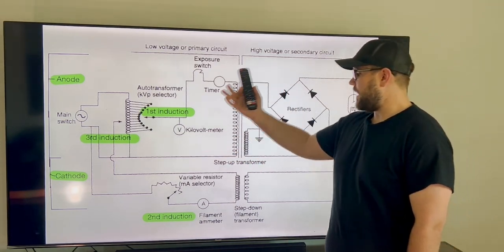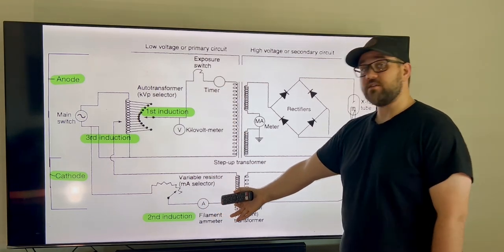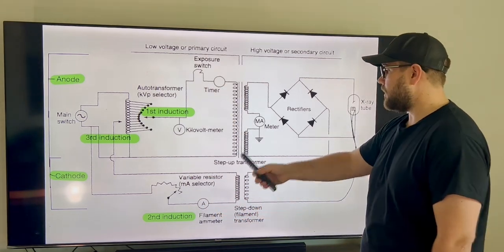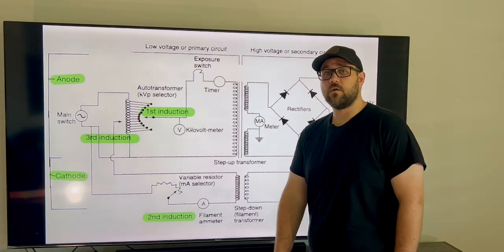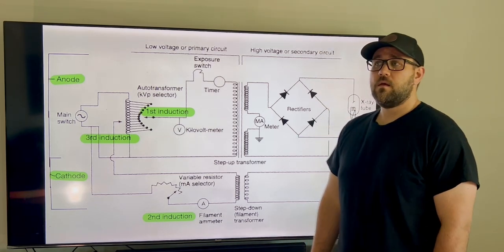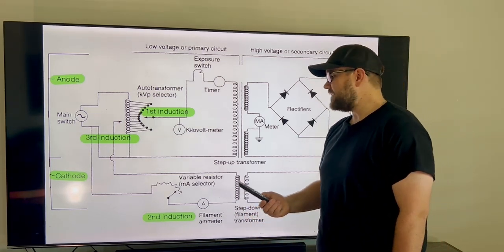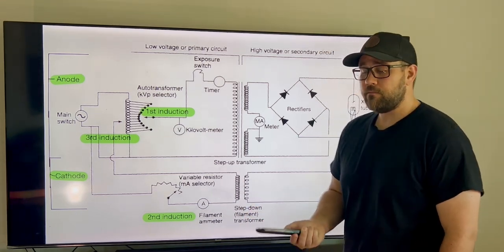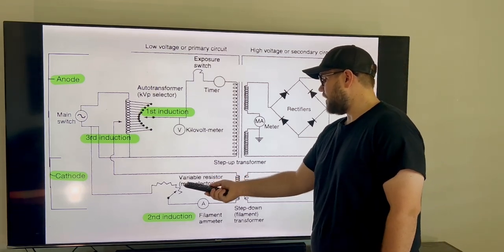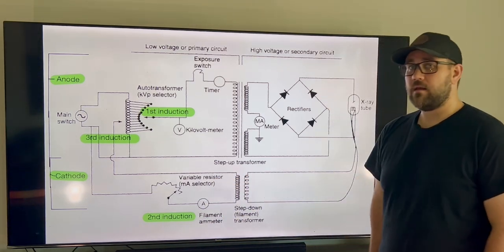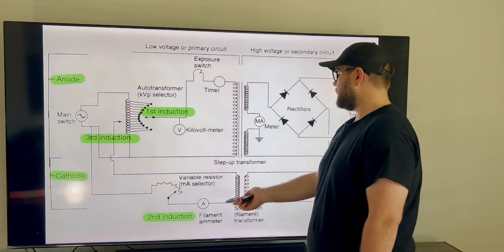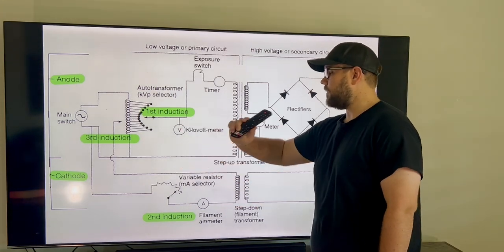In the same aspect, we're going to be down here at our second induction, and this is going to be our variable resistor or our mA selector. It's going to read our 80 mA, it's going to set itself, and it's going to be read by the filament ammeter, and it's going to continue on around up through here.